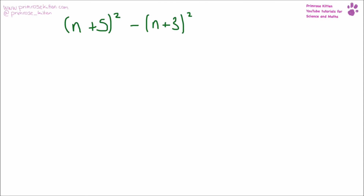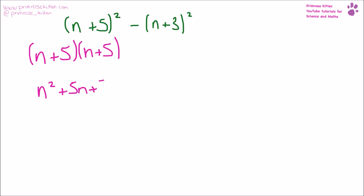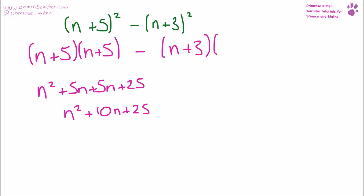Longer one here, but it still follows exactly the same principle. We've got quite a lot of brackets to expand. We have (n + 5)(n + 5) — I'm just going to deal with this part first. That gives us n squared plus 5n plus 5n plus 25, which tidies up to n squared plus 10n plus 25. Then minus what we have over here: (n + 3)(n + 3), which I'll put in big brackets for the moment. That gives us n squared plus 6n plus 9.